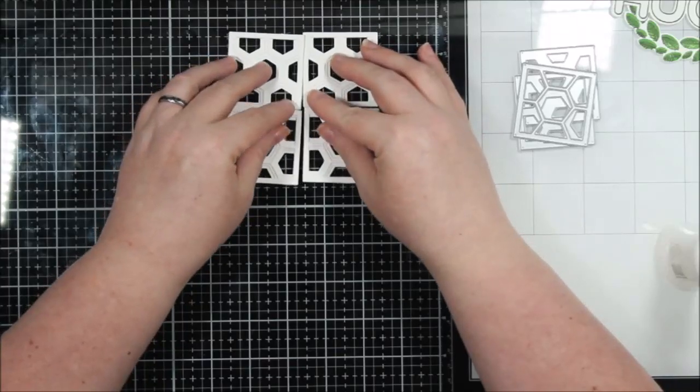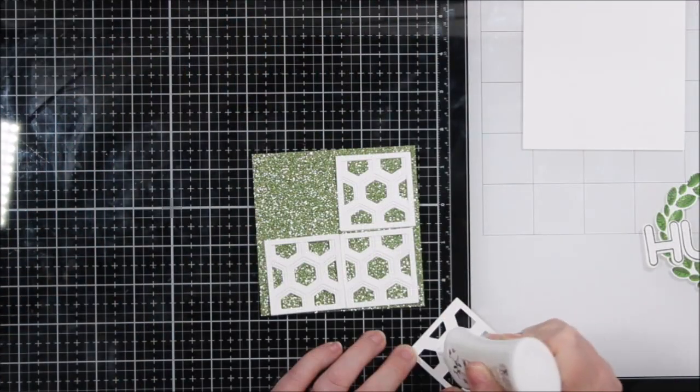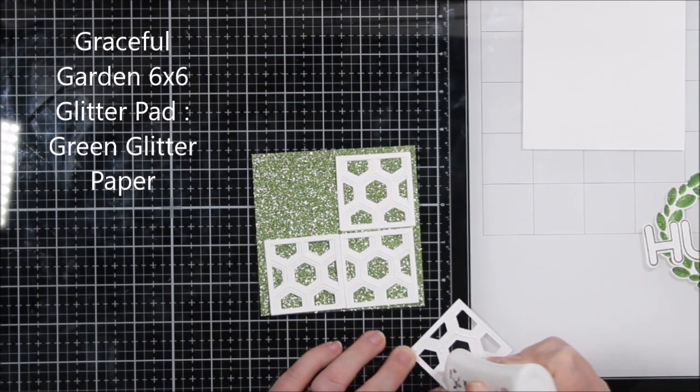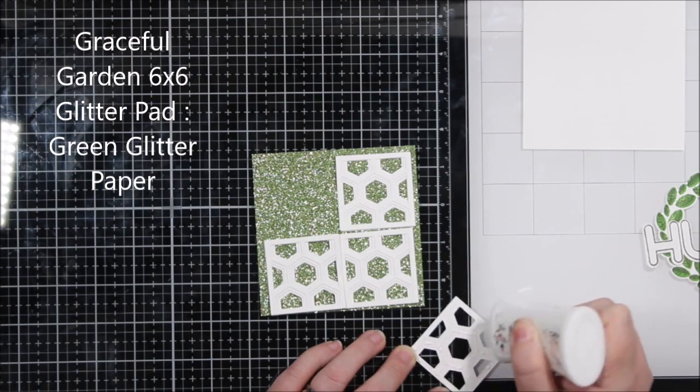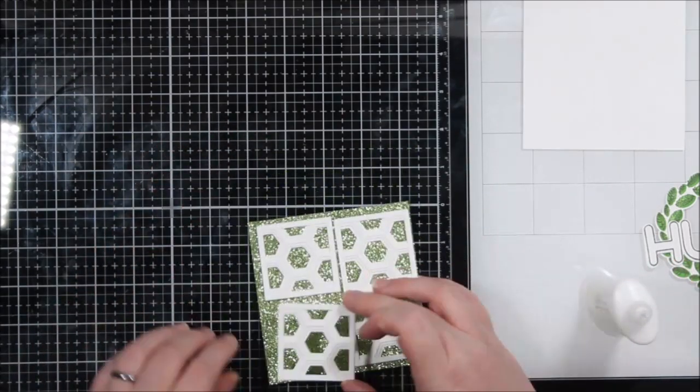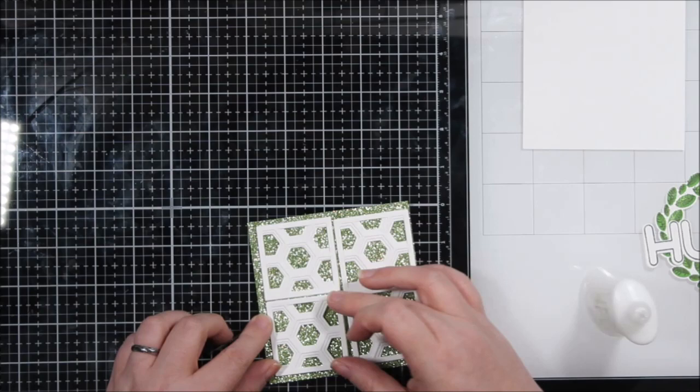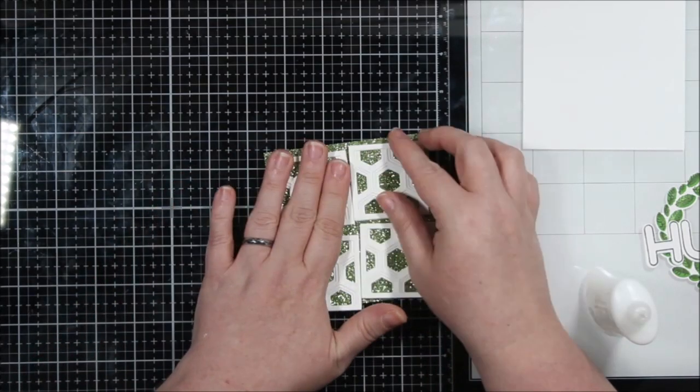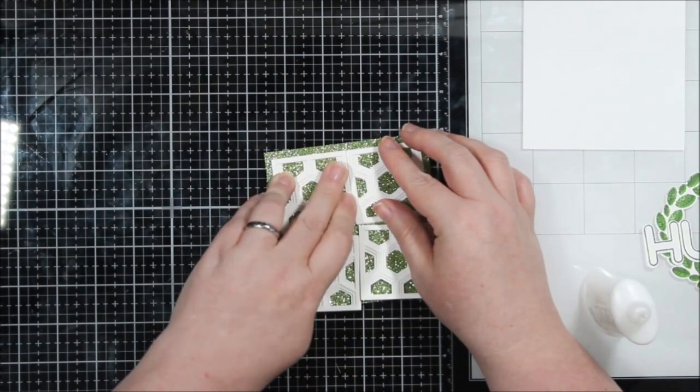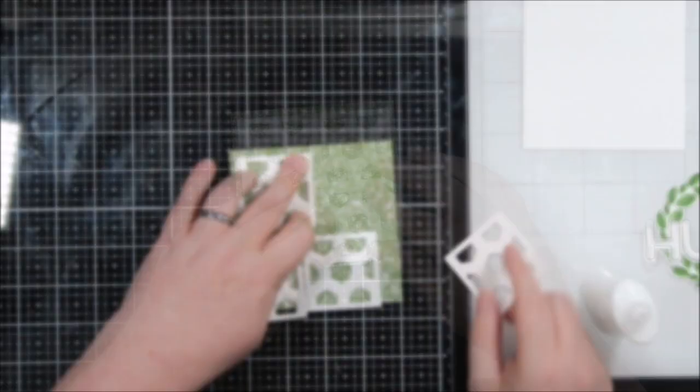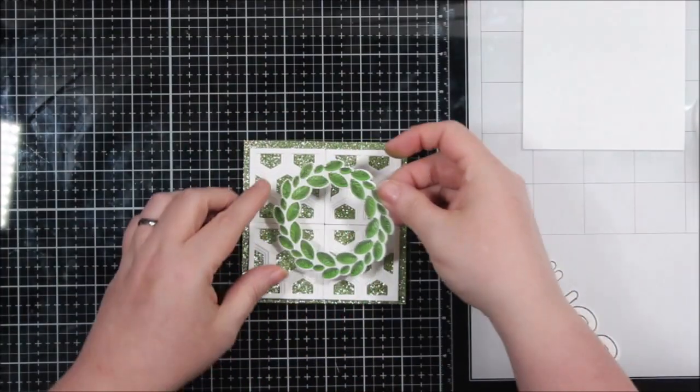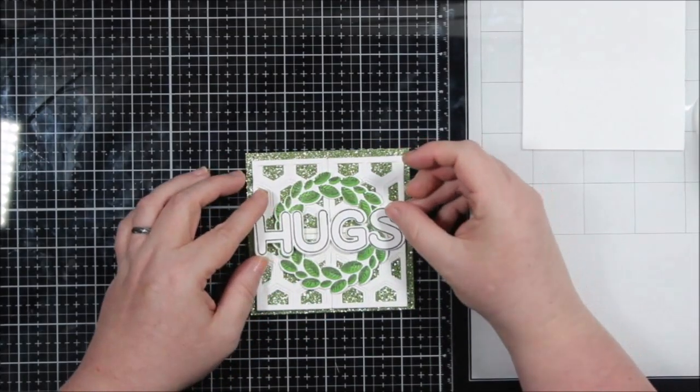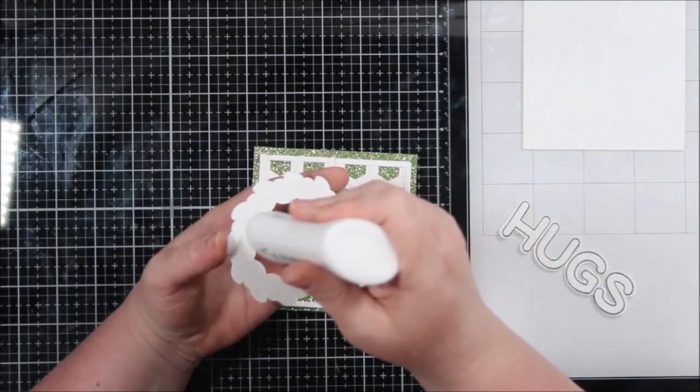My challenge to myself was to use it in a bigger way, so I created four of them. Now I'm going to adhere it to a piece of green glitter cardstock from the Graceful Garden 6x6 pad by Memory Box. I'm going to go ahead and just use some liquid adhesive and adhere all four pieces. I make sure that I hold them down because it is liquid adhesive and glitter cardstock. I made sure I held them in place just a little bit so that they were stuck.